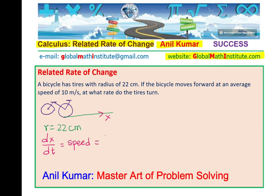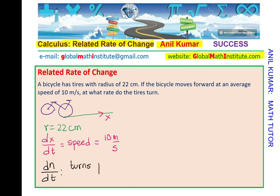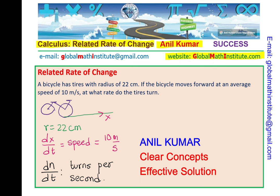It asks at what rate do the tires turn. There is a new thing here — the rate at which the tires turn. Let n be the number of turns per second. That is what we need to find. When the position is changing, the tires are also turning — these two things are related, and that is what we refer to as related rate of change.